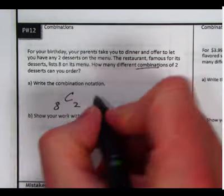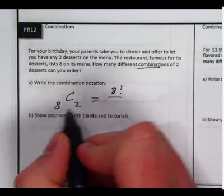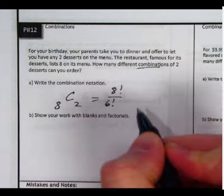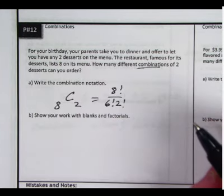Well, that means that I would have eight factorial ways to arrange that, and then there's six desserts that I'm not picking, so I'm going to divide those out, and my group size that I'm making is two, so I'm also going to divide it by two factorial.